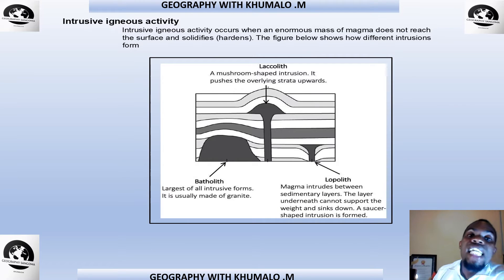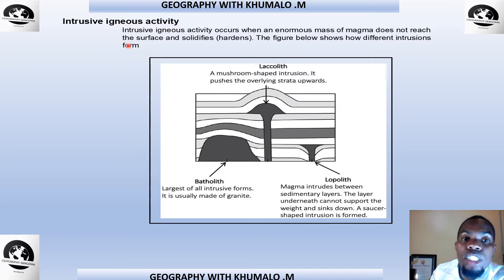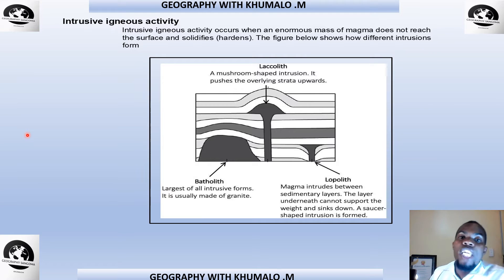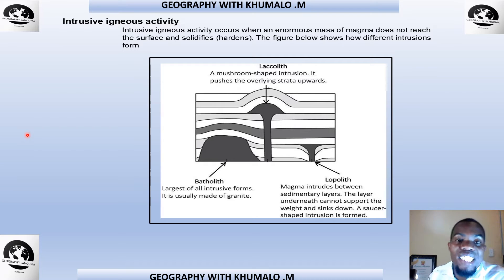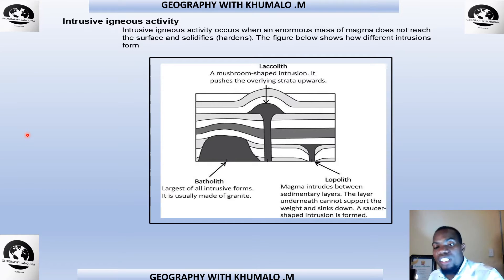Now we move into intrusive igneous activity. The word 'intrusive' means beneath the earth's surface. Intrusive igneous activity occurs when an enormous mass of magma does not reach the surface but instead solidifies and hardens underground. The figure shown illustrates how different intrusions form.